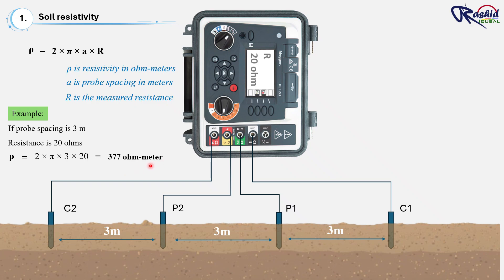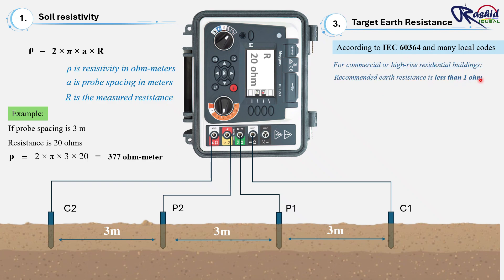So this is the resistivity of the soil. For most designs, we take the worst case, means highest value measured during the dry season. So in that soil, the resistance we get is 20 ohm. And according to IEC 60364 and many local codes, for commercial or high-rise buildings, the recommended earth resistance is less than 1 ohm. And for small buildings or residential villas, it should be up to 2 or less than 5 ohms. Once we obtain the soil resistivity value, we can select the most suitable earthing method for the project.